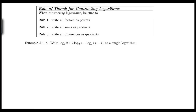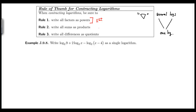Now we're going to contract logarithms, and this looks like an upside-down triangle — or a capital delta. You start off with several logs and use the properties to contract them down to one log. It's completely the reverse of expanding. The rules of thumb also go in reverse: first, write all factors as powers, then write all sums as products and all differences as quotients.